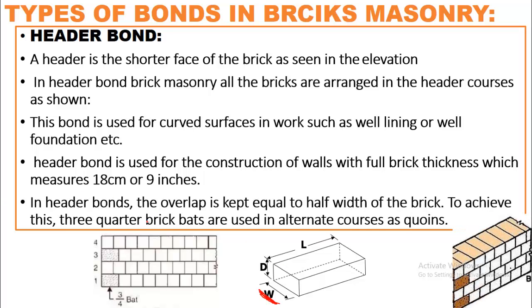Header bond is used for curved surfaces such as well linings or well foundations. In header bond, the overlap is kept equal to half the width of the brick. To achieve this, three-quarter brick bats are used in alternate courses as quoins, so that perpends — vertical joints — do not overlap in successive courses.